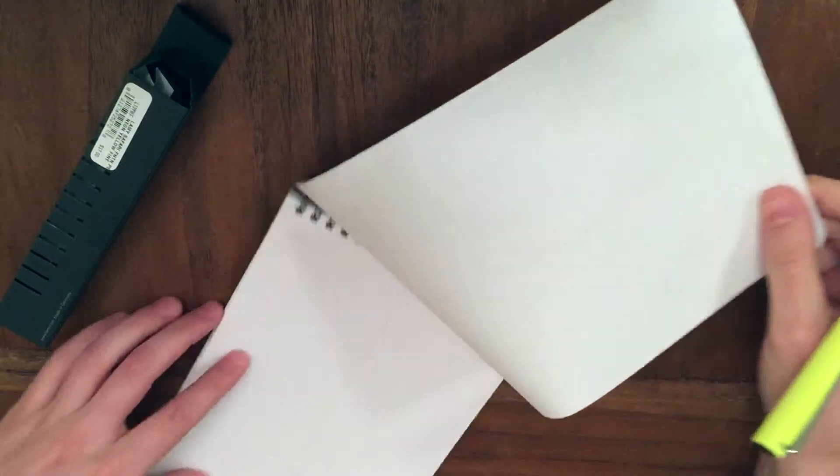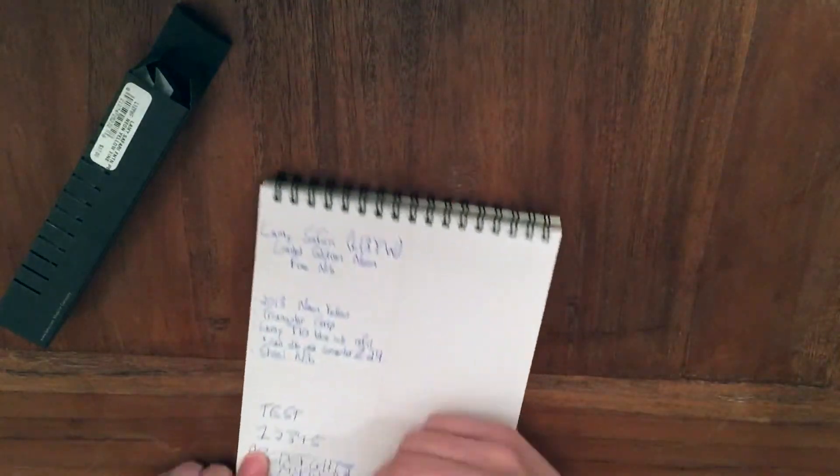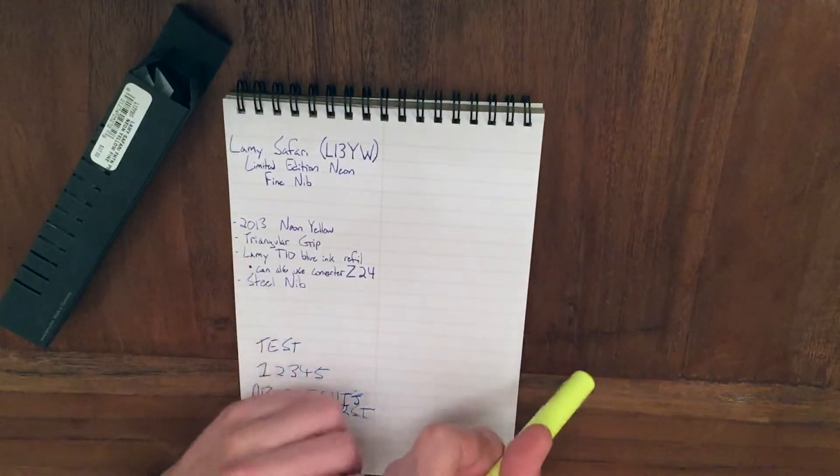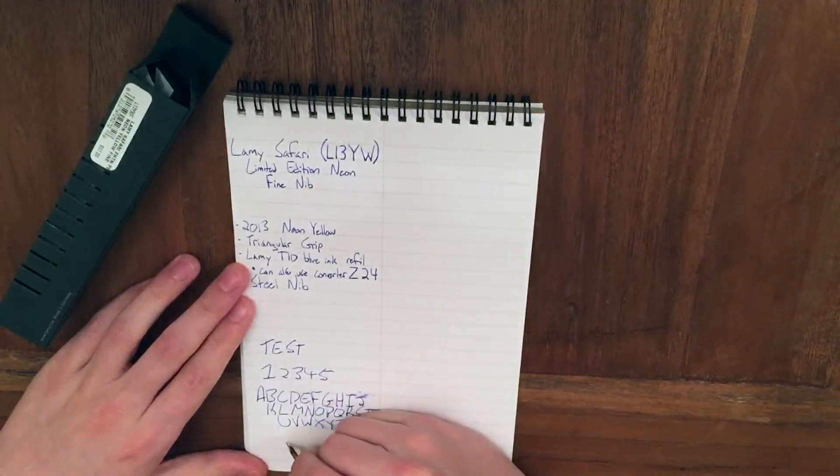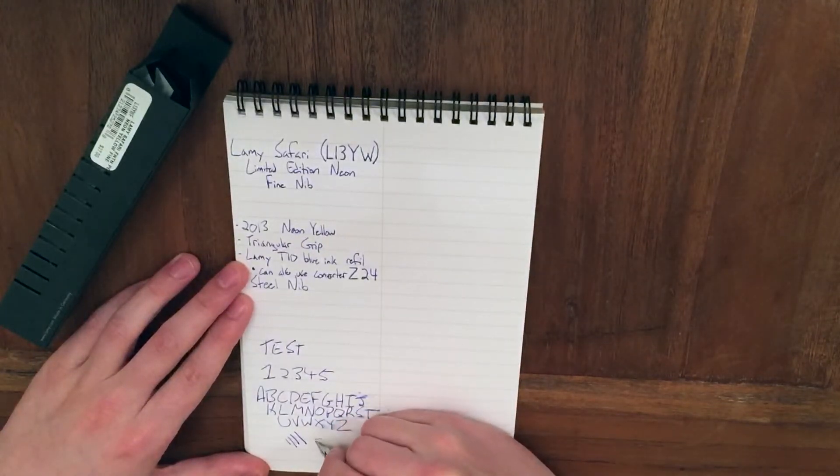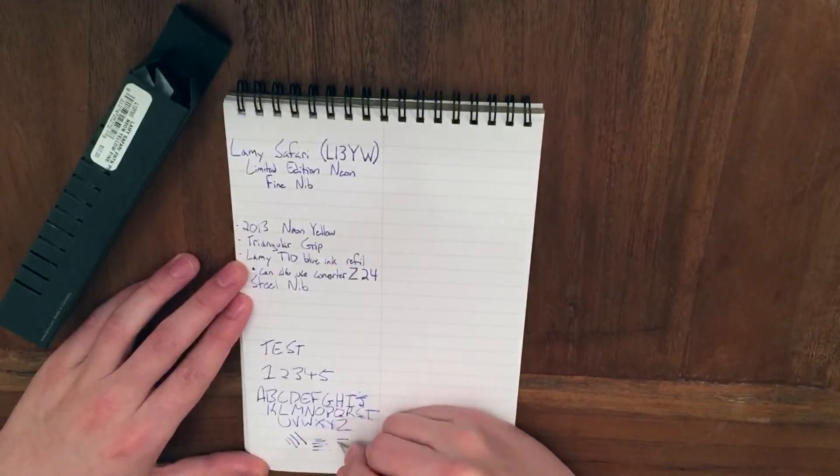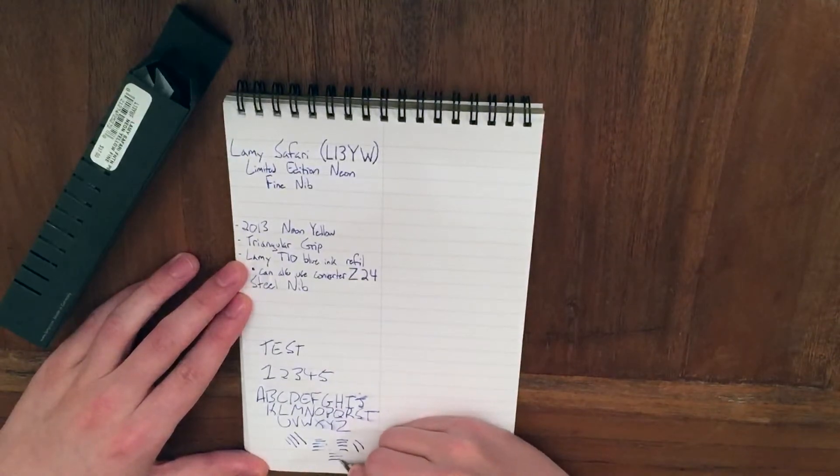You can see there's not really too much bleed through on this paper. Obviously it depends on the weight that you're pushing down. You can see it does smear a little bit, but that's more the ink than the pen. I'm writing a little bit heavy. You can definitely go lighter. There's a little bit of variance there that you can see. I might actually be running out of ink because I've been writing with it so much. Yeah maybe I'm just pushing too hard sideways.